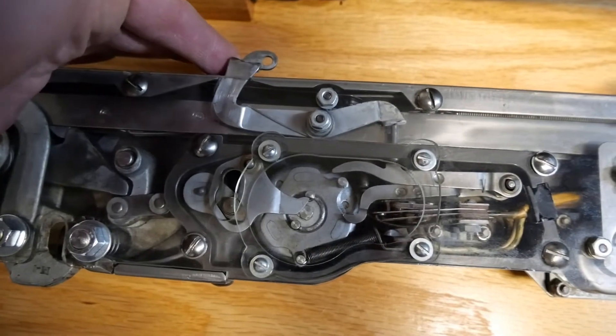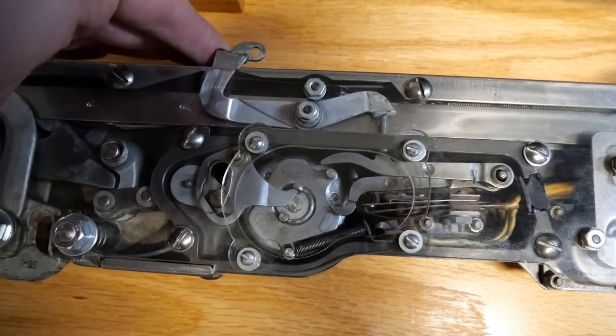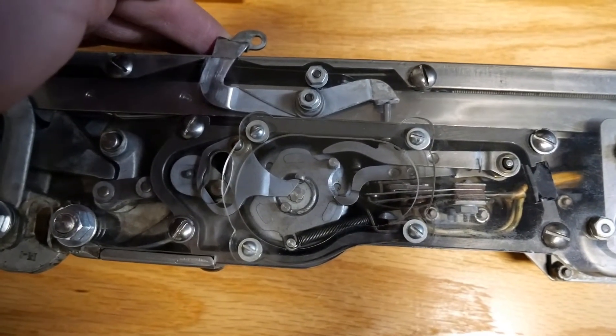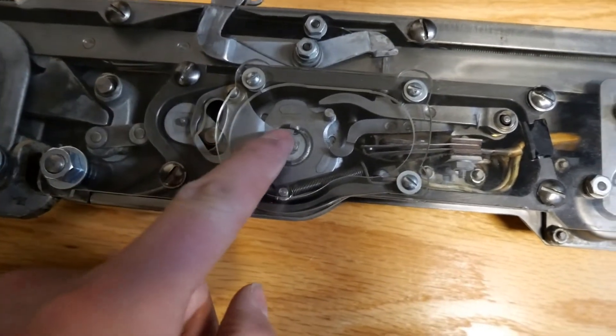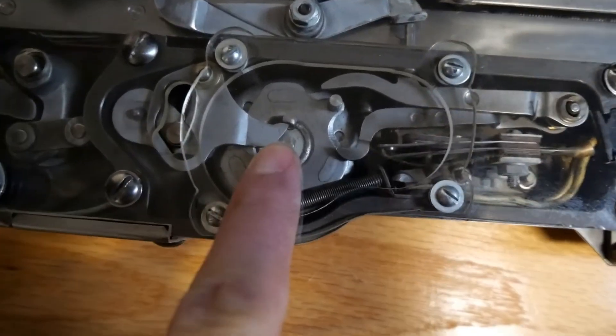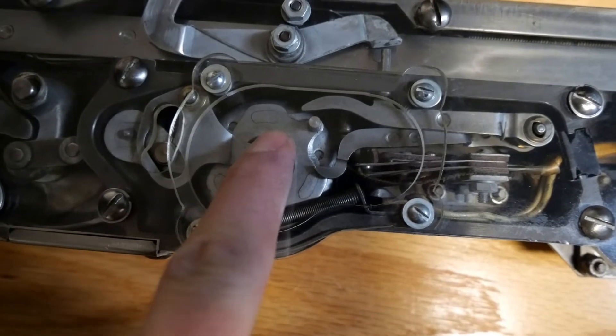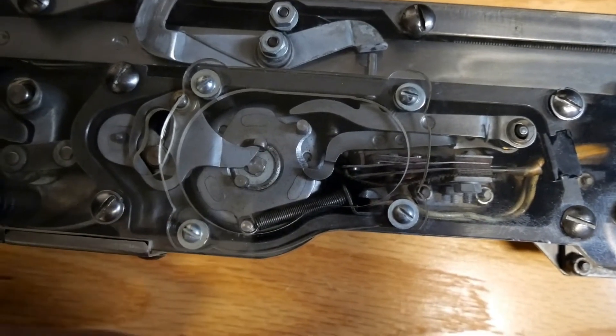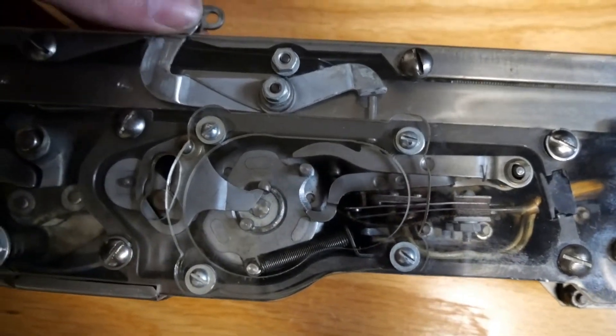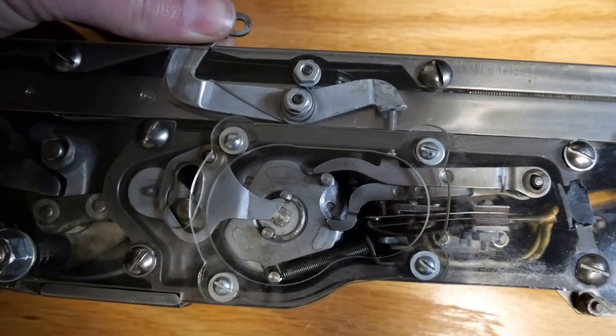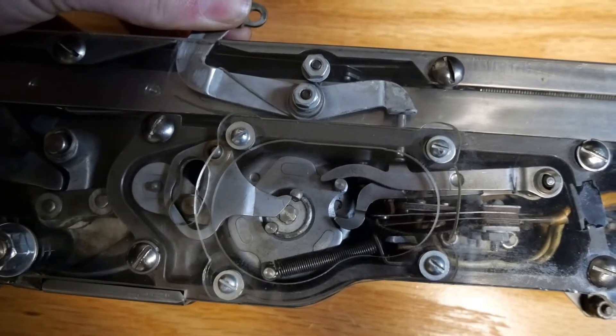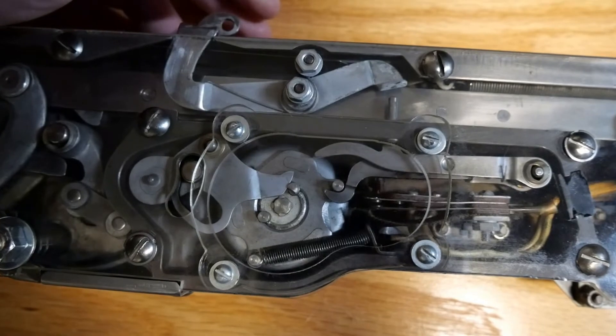Right here is the manual release. This whole mechanism works off this cog right here and this pawl. When the cog moves, the pawl moves up and then the bomb rack releases. I'll show you that real quick just based on the manual release. Watch the pawl. It moved up.